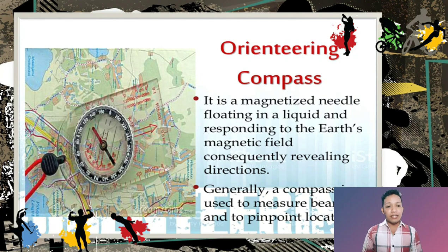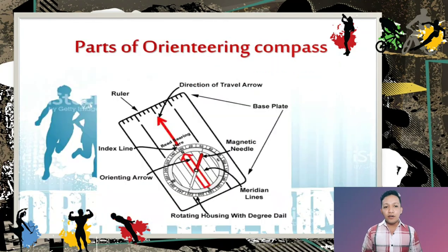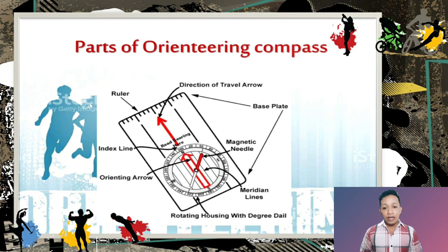The orienteering compass is a magnetized needle floating in liquid, responding to the earth's magnetic field to reveal directions. It is generally used to measure bearings and pinpoint locations. Parts of the orienteering compass include: ruler, direction of travel arrow, base plate, magnetic needle, meridian lines, rotating housing with degree dial, orienteering arrow, and the index line.